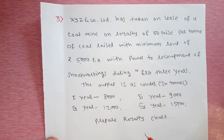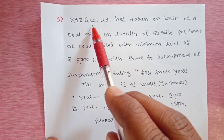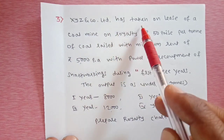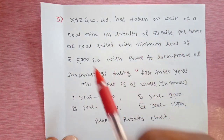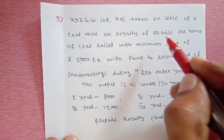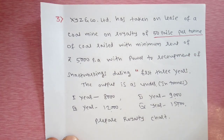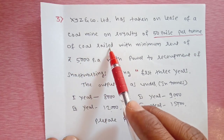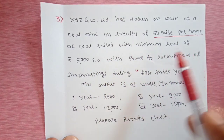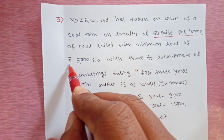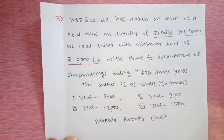In this video, I am going to discuss with you a third problem which is based on preparation of royalty chart. XYZ and Company Limited has taken on lease of a coal mine on royalty of 50 paise per ton of coal raised, with a minimum rent of Rs 5,000 per annum. So this minimum rent of Rs 5,000 per annum is important.